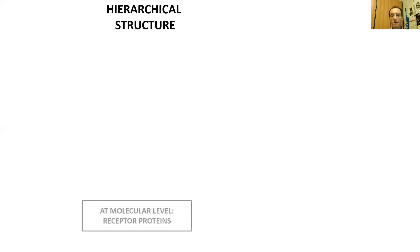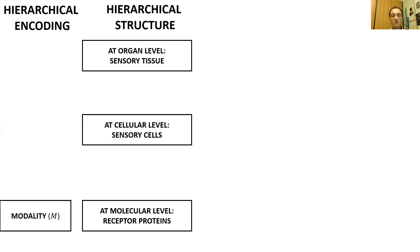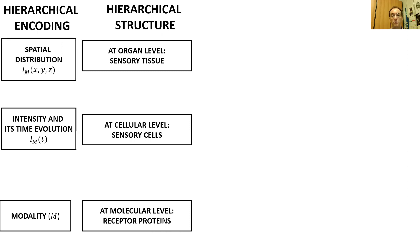At the lowest level, there is a collection of receptor proteins. At the upper level, there are receptor cells that contain several replicas of the receptor molecules. At the highest level, we have many copies of the receptor cells distributed adequately in space, often covering a tissue. The information regarding the modality of a stimulus is encoded at the molecular level. The information regarding the intensity and its time evolution is encoded at the cellular level. And finally, its spatial distribution is encoded at the tissue level.